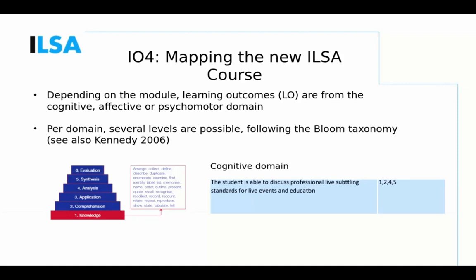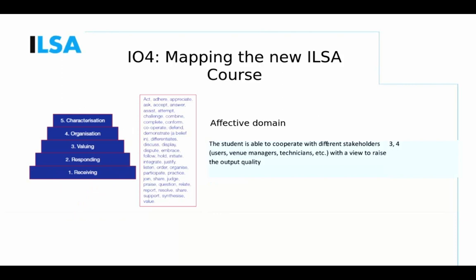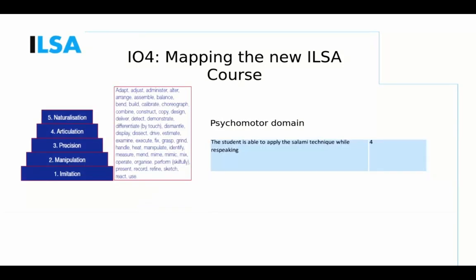Many learning outcomes in this course are from the cognitive domain. The next slide shows an example of a learning outcome from the affective domain — there are not so many of these in our course — and then a learning outcome from the psychomotor domain.